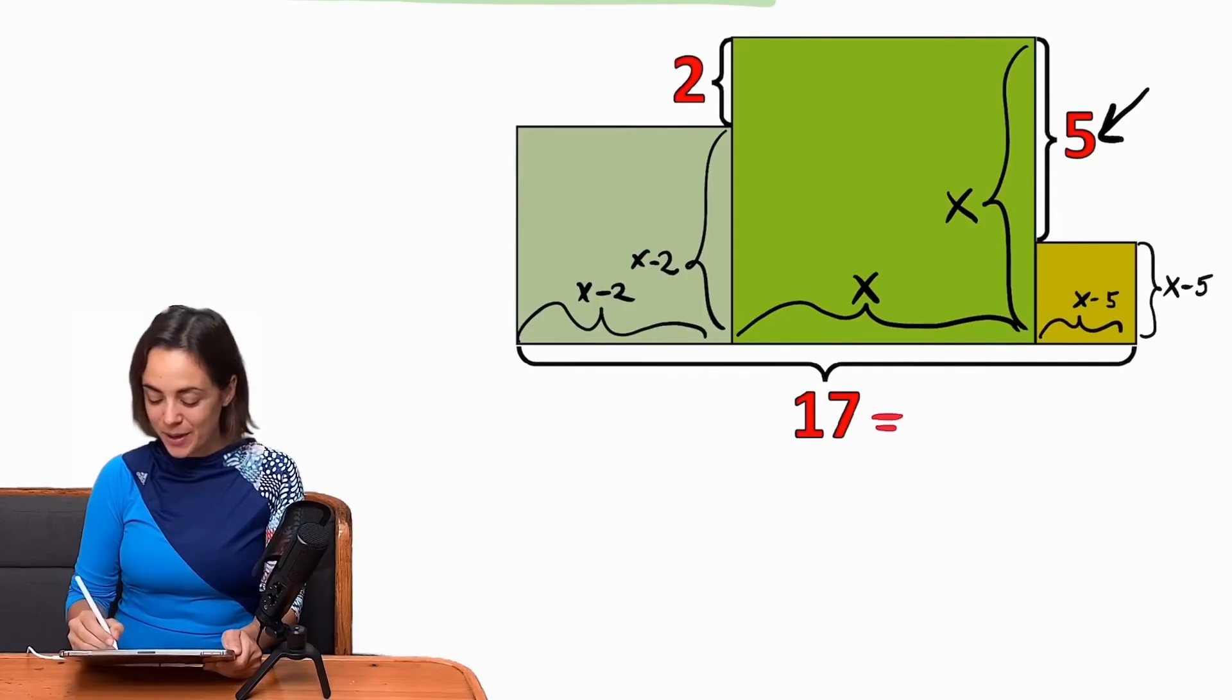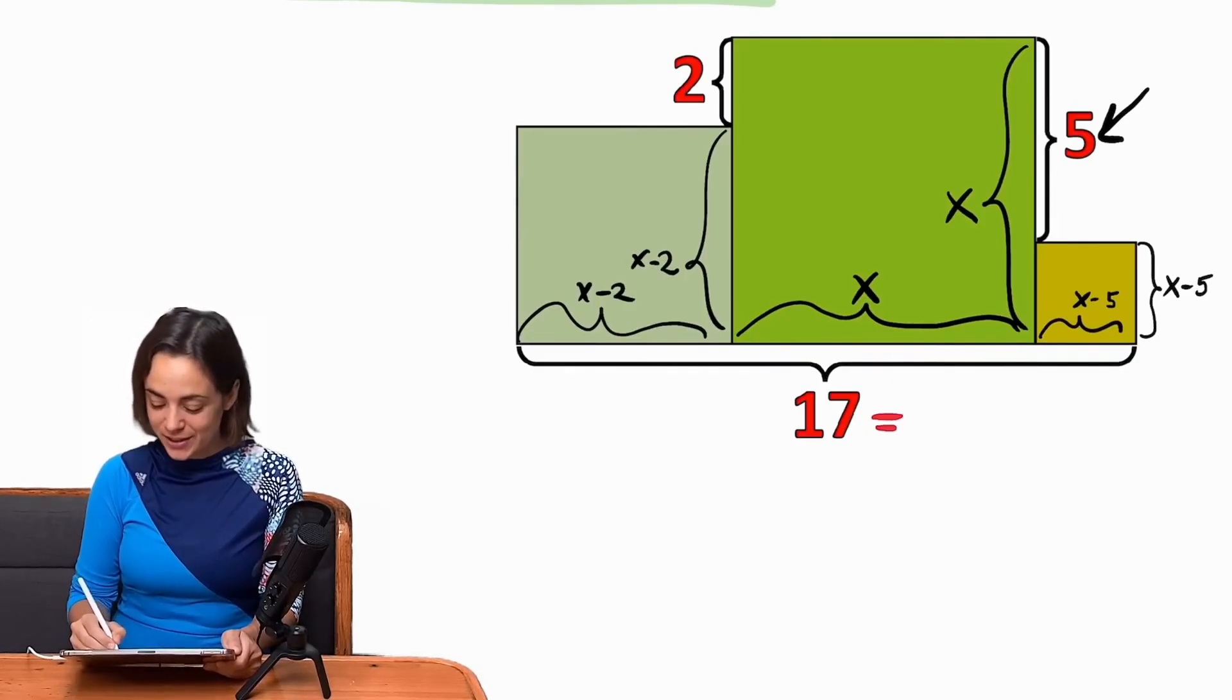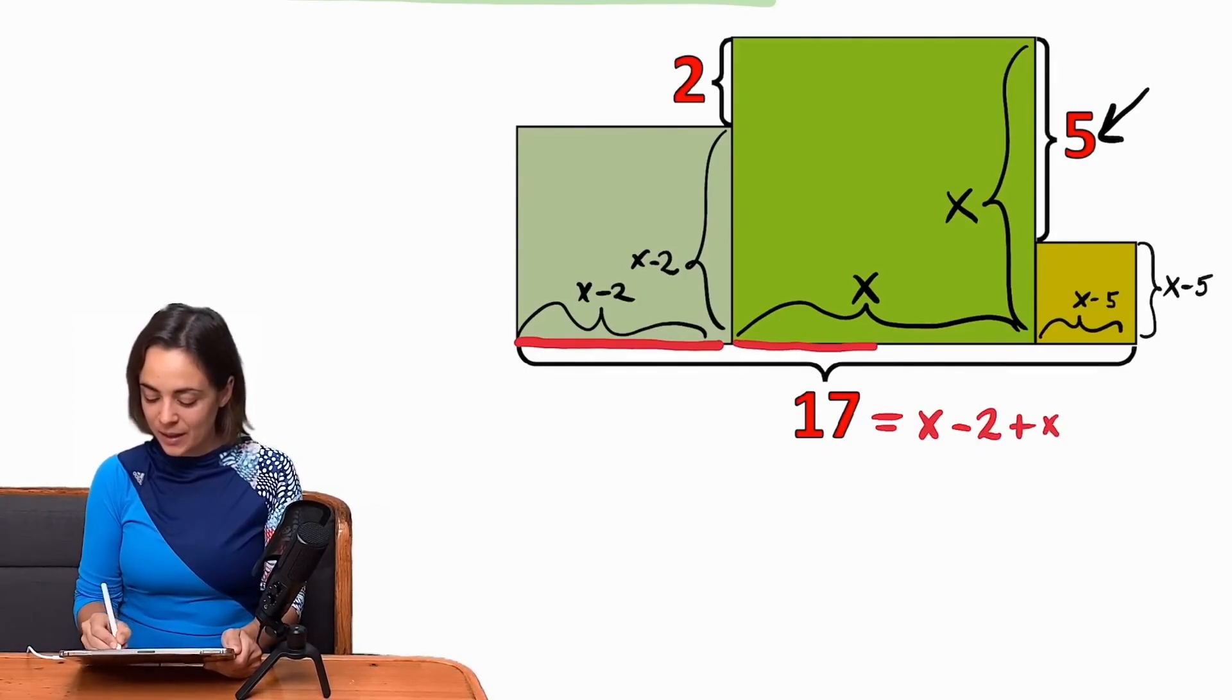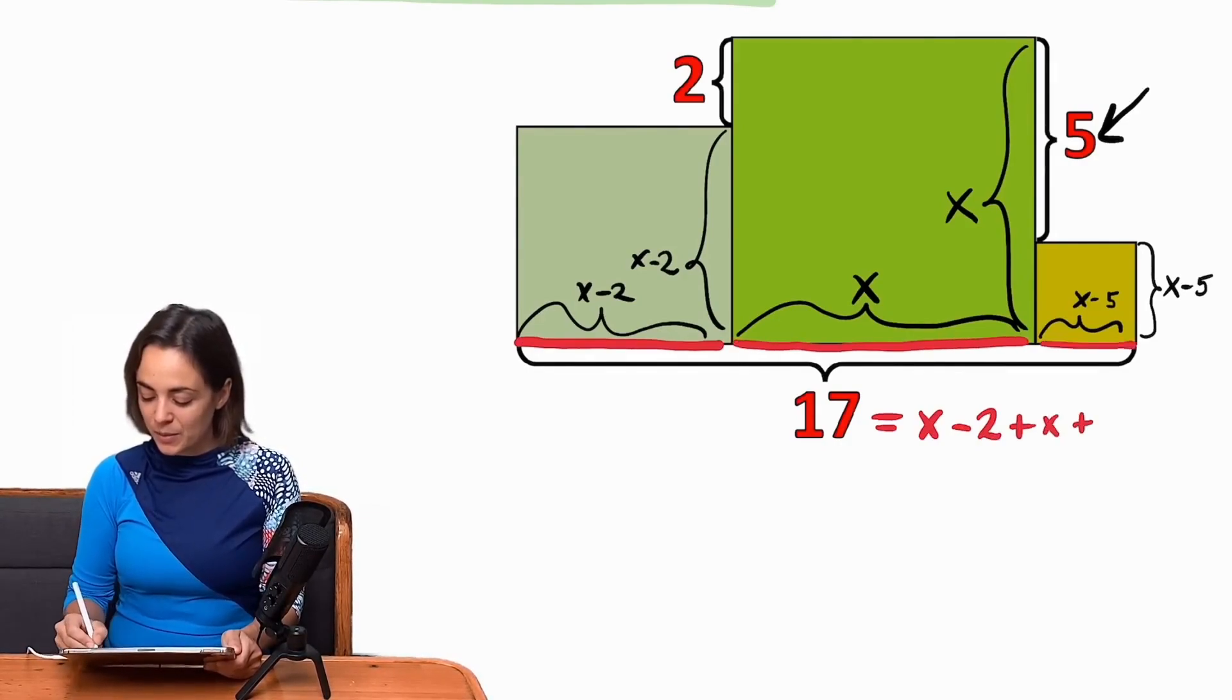And the 17 is composed with my introduction of the variable x of x minus 2, this piece, then x itself, this piece, and then x minus 5.